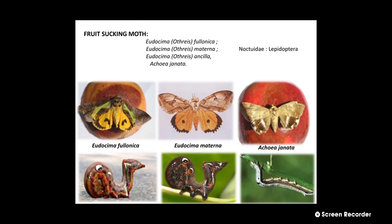The second major pest of the pomegranate is Fruit Sucking Moth. There are three different species: first is Eudocima fullonia, second is Eudocima materna, and third is Eudocima ancilla or Achaea janata. All three species belong to the same family Noctuidae and order Lepidoptera. In the image we can see the three different adult moths and three different larvae of the Fruit Sucking Moth.